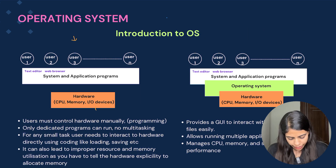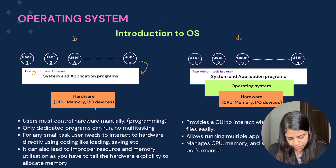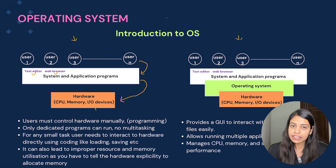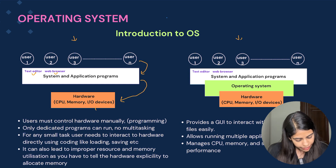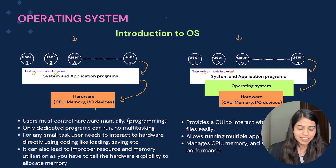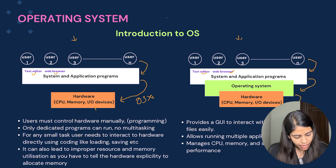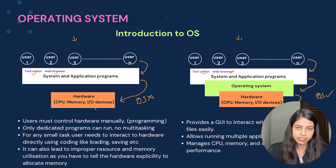There are two diagrams here. In diagram 1, the user is interacting with system and application programs such as a text editor and web browser, and those programs are directly interacting with the hardware — there is no operating system. In diagram 2, the user interacts with the system and application programs, those programs interact with the operating system, and then the operating system manages all communication with the hardware.